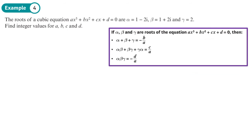The roots of a cubic equation are given as alpha equals 1 minus 2i, and now we've got complex roots, so this one is a little more complex. We need to find integer values for a, b, c, and d. We're going to use the Vieta's rules to help us do it, and we'll divide the cubic through by the coefficient of x cubed so we only have three unknowns instead of four.